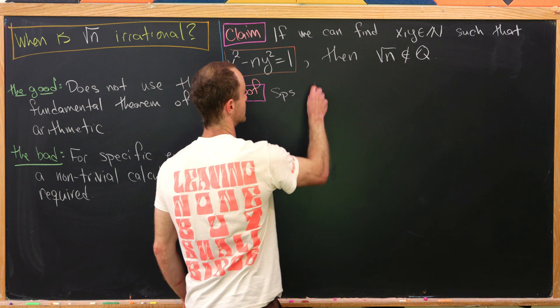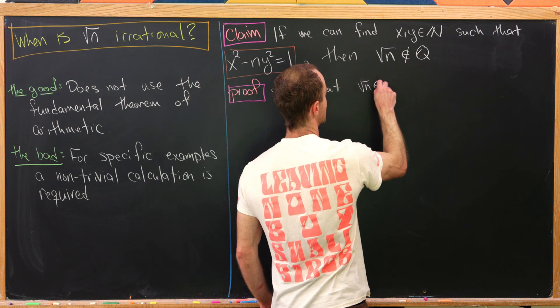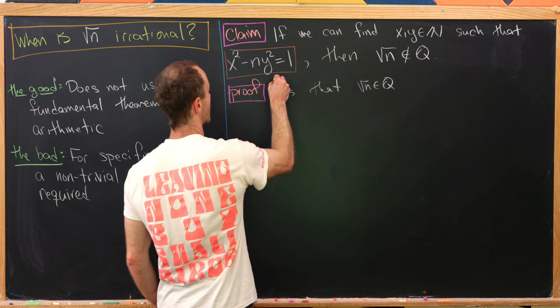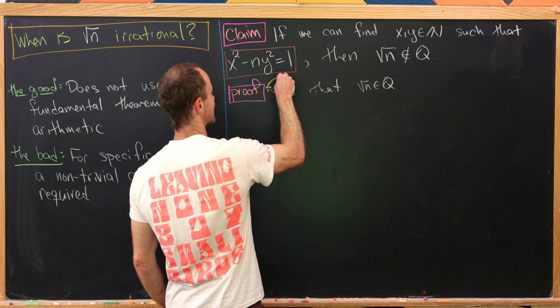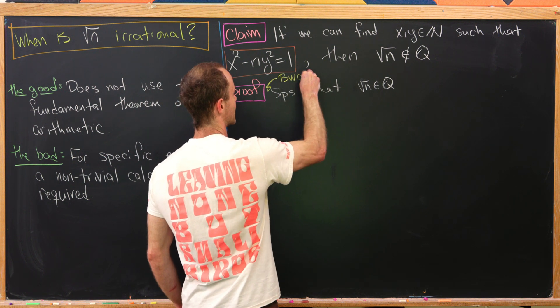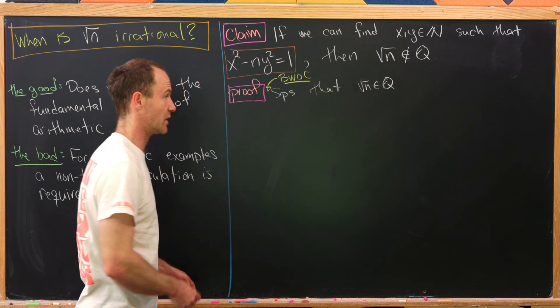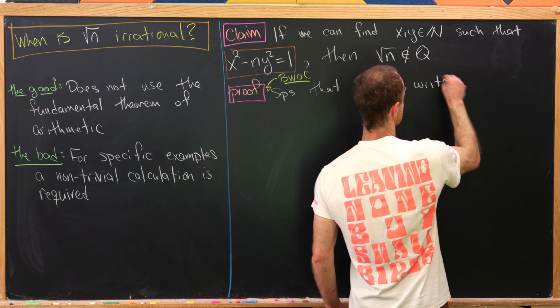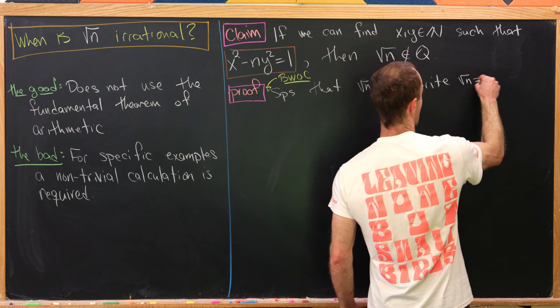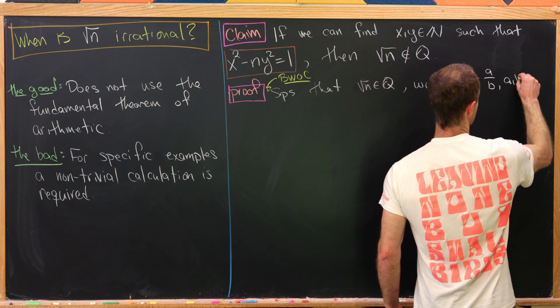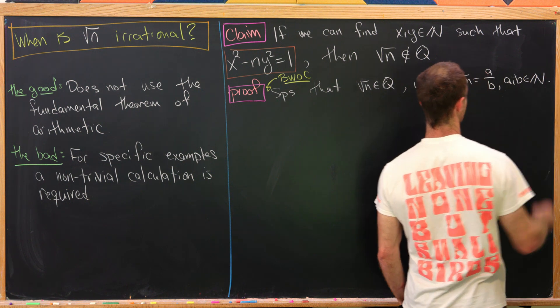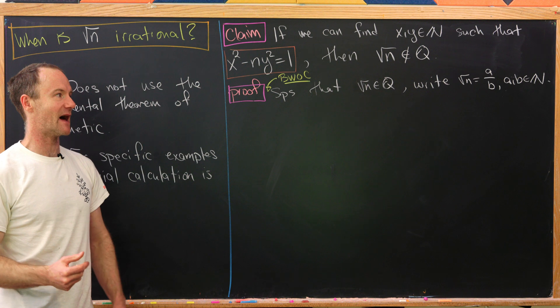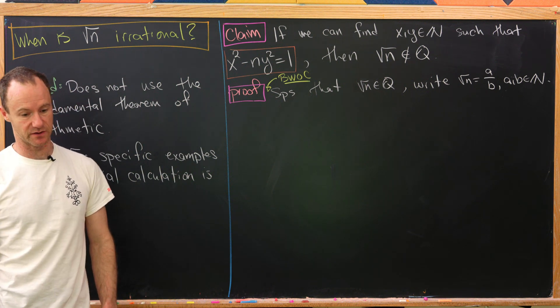Let's suppose that the square root of n is rational. I guess that means we're working towards a contradiction. By way of contradiction, we will suppose that the square root of n is rational. Then we'll write the square root of n as a over b, where a and b are natural numbers and they're also in lowest terms.